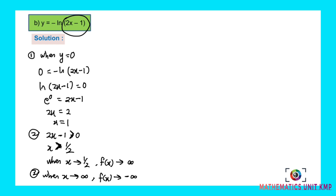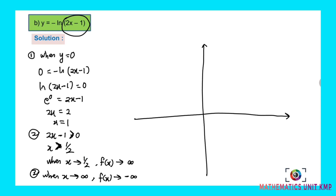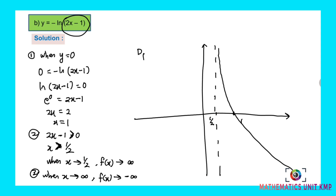Now we go to the sketching graph. First step: plot the point at x equals 1. Then x equals one-half is the asymptote. When x is approaching one-half, f(x) goes up to positive infinity like this. When x is approaching positive infinity, f(x) goes downward like this. So the domain is open one-half to infinity, and the range is from negative infinity to positive infinity.